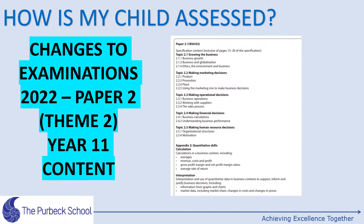The following slide outlines exactly which topics need to be covered for Paper 2. Again, some topics have been removed. In terms of calculations, students need to be able to calculate averages. Revenue, cost and profit also feature in Paper 2, but students also need to be able to calculate gross profit margin, net profit margin ratios, and average rate of return. There will also be information from graphs and charts to interpret, and market data including market share and changes in costs and prices.